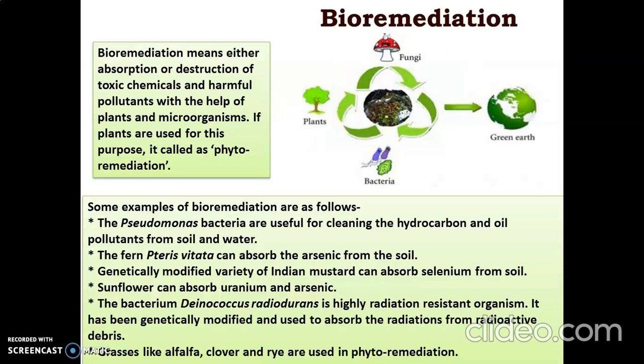Bioremediation means the use, absorption, or destruction of toxic chemicals and harmful pollutants with the help of plants and microorganisms. If plants are used, it is called phytoremediation. Different examples of bacteria and various plants can be used to remove harmful substances or harmful minerals from soils, which is good for the environment. These could be genetically modified for this purpose.